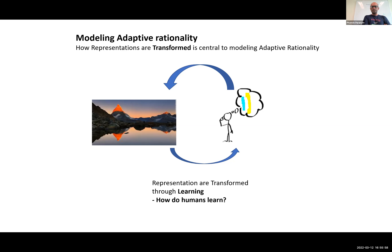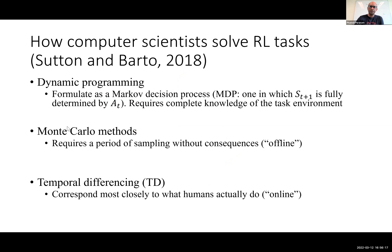What I want to show you is some fairly robust empirical signatures of how humans learn. This is useful for us because we are trying to build models that replicate what people do, rather than models that necessarily optimally solve a reinforcement learning task. To go back to the computer science framework I showed you earlier, our focus is really on bullet point number three — the temporal differencing approach — because we know this is what comes closest to what humans do.